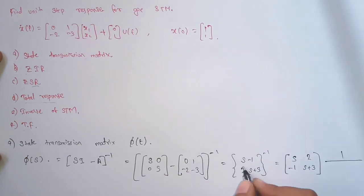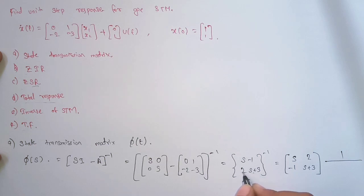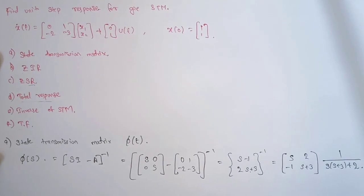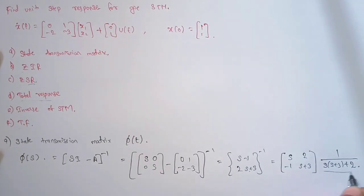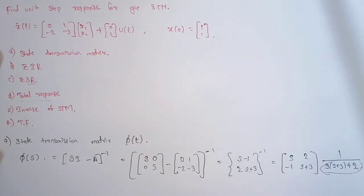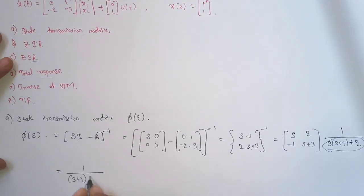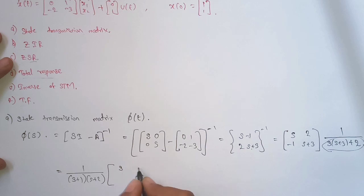The determinant of (sI - A) is s(s+3) minus (2)(−1), which gives s² + 3s + 2, and this factors as (s+1)(s+2). So the determinant simplifies to 1 over (s+1)(s+2), and the adjugate matrix remains as is.